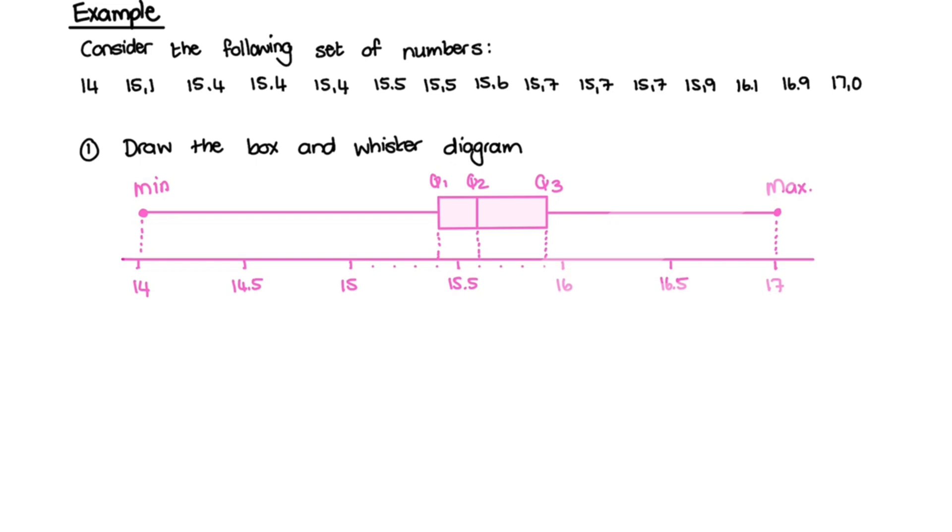Now you can either do this with your calculator, or you can do it manually. For the median, or quartile 2, we need to find the middlemost value of this data set. So we have 15 data points, so the middle of that is 7.5, or we can say the 8th position. So 15.6 would be our quartile 2, or our median.